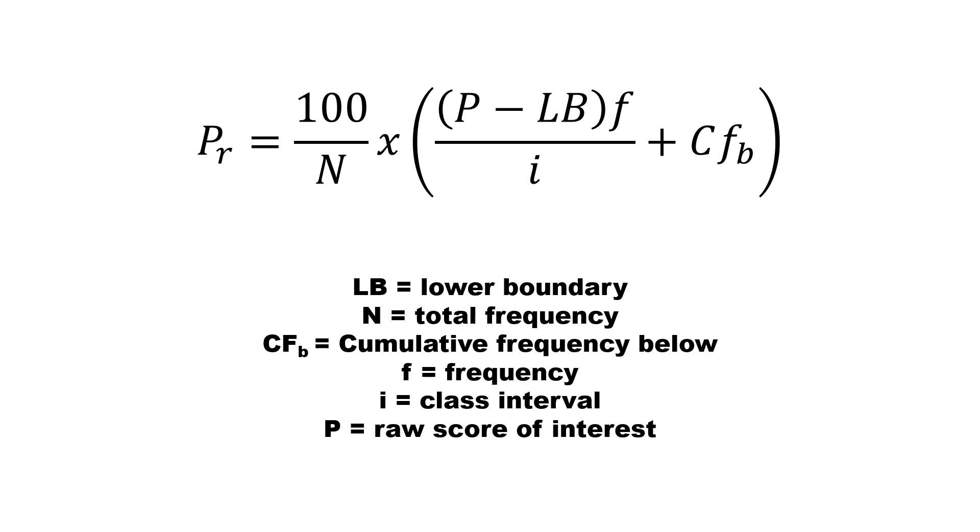The formula for the percentile rank for grouped data is equal to 100 divided by N, times the raw score of interest, minus the lower boundary, times the frequency, divided by the interval, plus the cumulative frequency below.